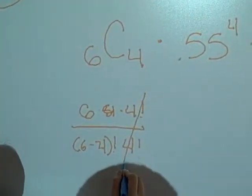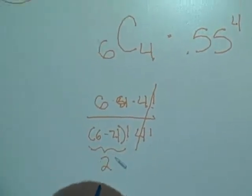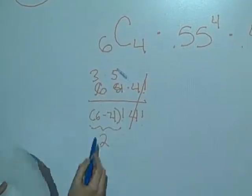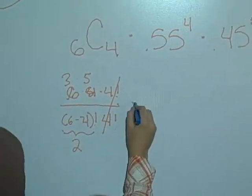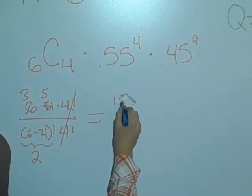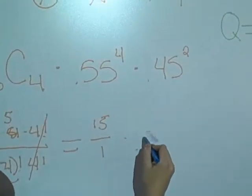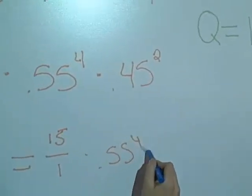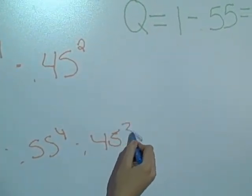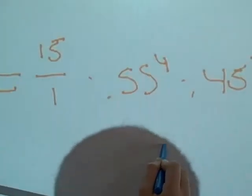So these cancel out, and then this equals 2. So 2 divided by 6 is 3, so you have 3 times 5, and that equals 15 over 1 times 0.55 to the 4 times 0.45 to the 2nd. And in the calculator, you should get 0.2779.